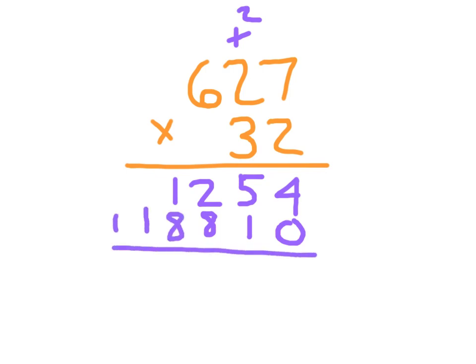Add those numbers together: 4, 6, 0. Regroup a 1. Then 1 plus 1 is 2, plus 8 is 10 — place the 0 and regroup another 1. Then 1 and 1 is 2. Place your comma, and you have your answer: 627 times 32 is 20,064.